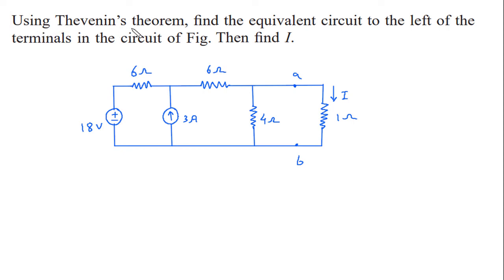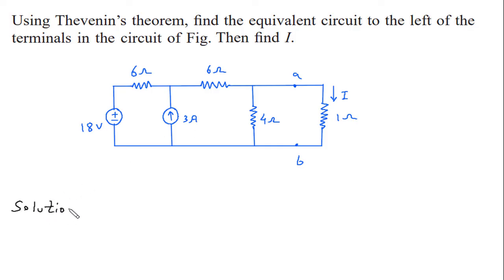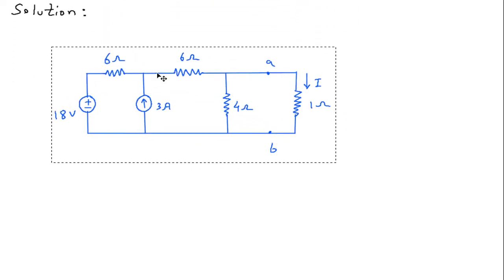Using Thevenin's theorem, find the equivalent circuit to the left of the terminals in the circuit of the figure, then find I. Solution: first of all we will redraw the circuit.